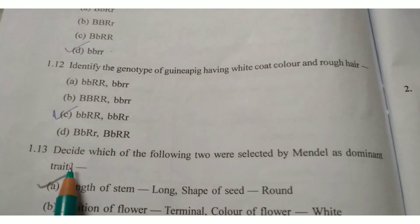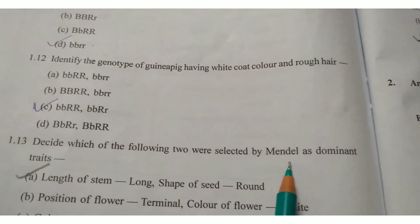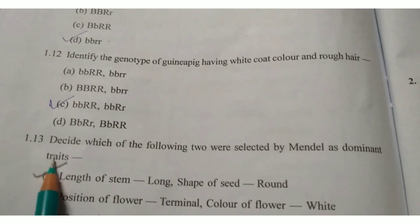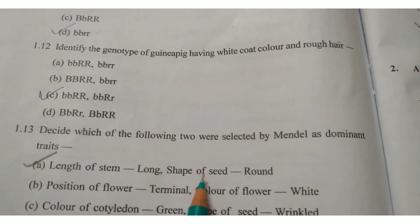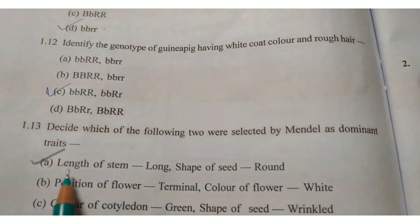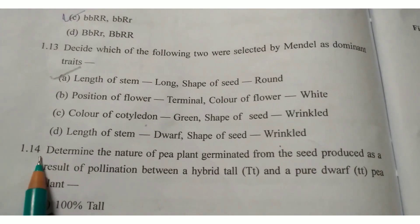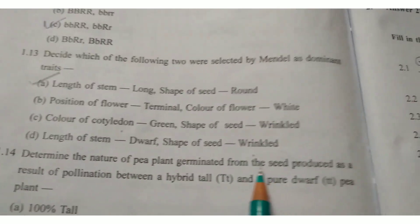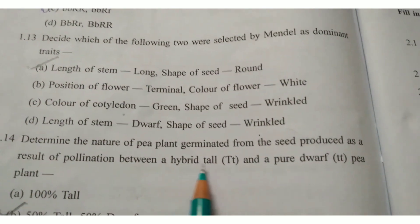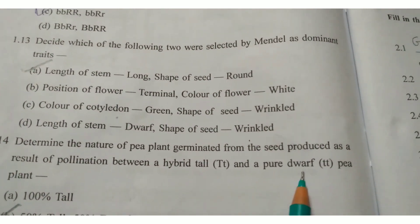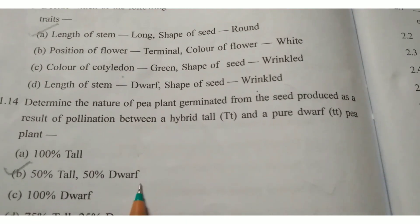Next, question 1.13: Decide which of the following two were selected by Mendel as dominant traits. Write answer option A — length of stem: long, and shape of seed: round. Next, question 1.14: Determine the nature of pea plant germinated from the seed produced as a result of pollination between a hybrid tall (Tt) and pure dwarf (tt) pea plant. Write answer option B — 50% tall and 50% dwarf.